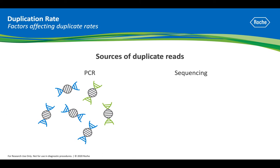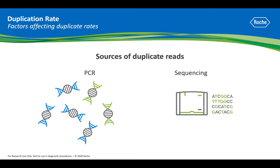Sequencing can also produce duplicate reads, where the same template library is used for cluster generation resulting in identical sequencing clusters producing sequencing reads with the same 5' and 3' ends. This is often observed on sequencers using patterned flow cells.